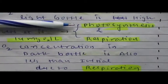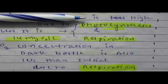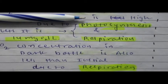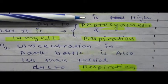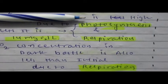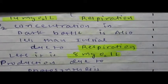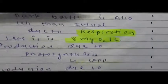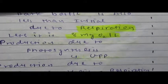In the dark bottle, no photosynthesis occurs — only respiration occurs. So the oxygen concentration is less than the initial period. For example, let us assume it is 8 micrograms per liter. Now, gross primary production is the production due to photosynthesis.